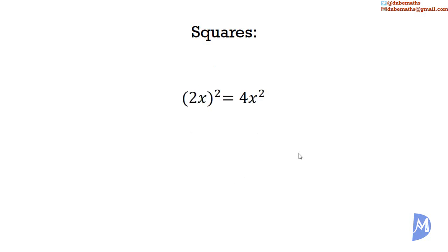For example, 4x squared, which is 2x squared, and 16y squared, which is 4y squared. The difference of squares literally means the difference of two square terms.